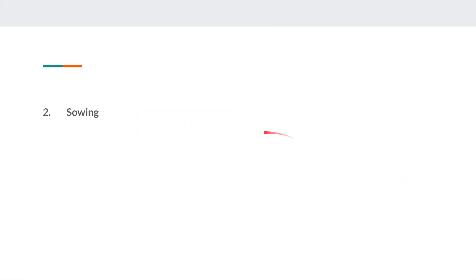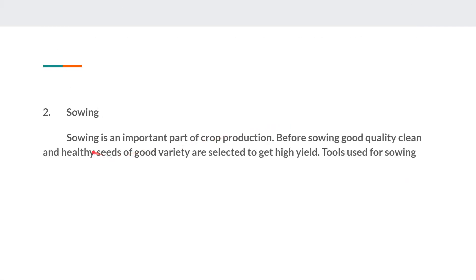The second question is sowing. We have to write a paragraph on sowing. Sowing is an important part of crop production; it is the second step in crop production. Before sowing, good quality, clean and healthy seeds of good variety are selected to get a high yield.